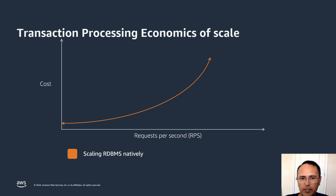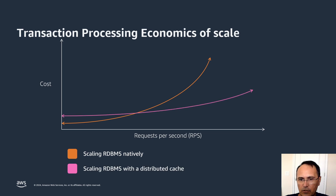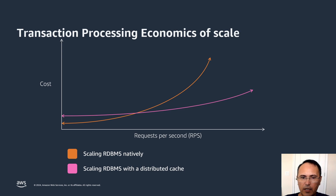What if I were to tell you that we can flatten this curve — make it significantly flatter — if you were to add a caching service to your existing workload? This next line represents the cost of requests per second when you pair your workload with AWS ElastiCache. You can see that it becomes much flatter at a way higher rate of requests per second. I will show you tools and techniques to identify workloads that are good candidates to flatten the curve, even finding the intersection point to determine where your workload is located.